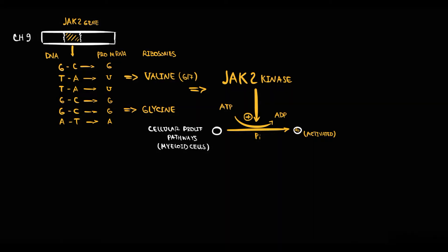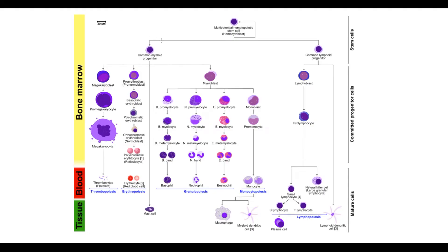To explain what are myeloid cells, we have to know that hematopoiesis can be subdivided into myelopoiesis and lymphopoiesis. Myelopoiesis can be subdivided into erythropoiesis that produces red blood cells, and thrombopoiesis that produces megakaryocytes from which platelets are formed.